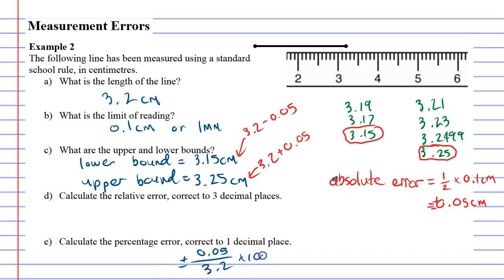Times 100. And what do we get? 0.05 divided by 3.2 times 100 comes out to, if I'm doing it to one decimal place, 1.6 percent with a plus or minus in front. Meaning that our measurement of 3.2 centimeters could have an error of about 1.6 percent in either the positive or negative direction.